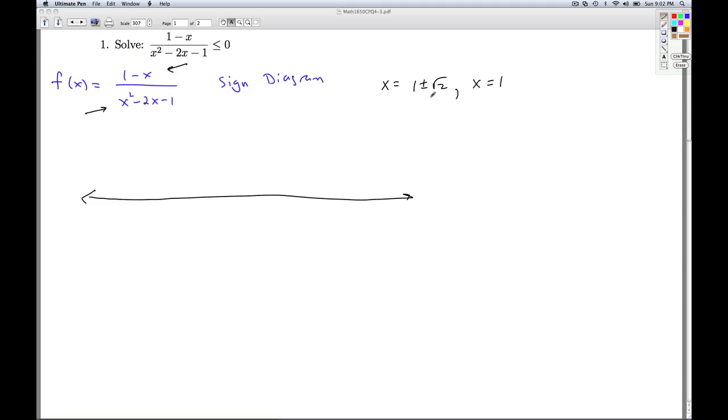So we try to line these up on the number line. I'd have one minus square root two is the smallest of those numbers, then one, then one plus square root two. And it might help to approximate the square root two—that's roughly 1.4-ish. So this is roughly negative 0.4, and this is roughly 2.4. Now, at one plus or minus square root two, the function was undefined, so we're going to put our question marks up there. And at x equals one, the function was zero, so we're going to put a zero there.